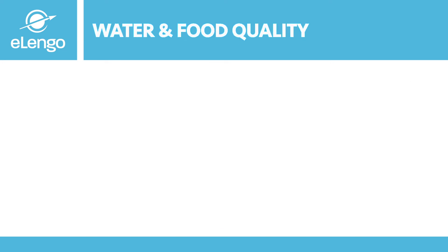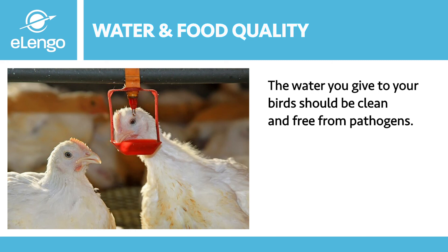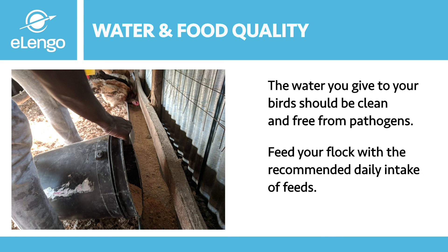Water and food quality. The water you give to your birds should be clean, free from pathogens, and fit for human consumption. If you are using chlorinated water, ensure that during vaccinations you boil and cool the water before use, as chlorine is known to reduce the efficacy of vaccines. Ensure you are also feeding your flock the recommended daily intake of a balanced feed that has protein, carbohydrates, and minerals, with an added coccidiostat in it. Water and feed should be fresh every morning.